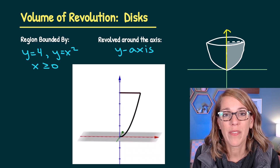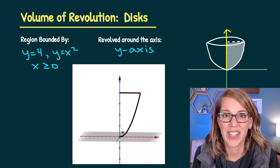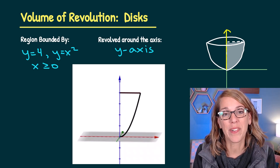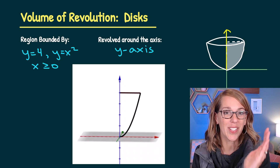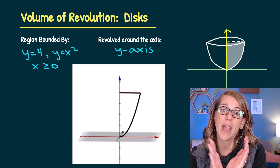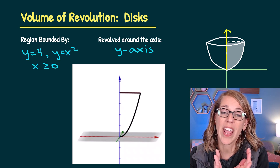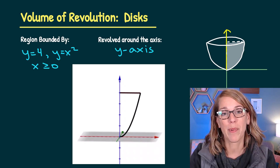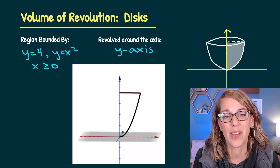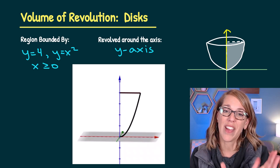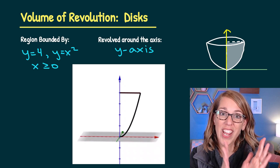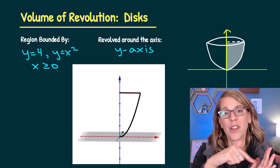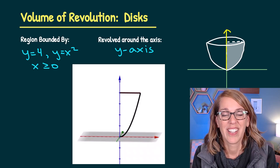We're going to look at volumes of revolution involving disks. In this first example, I've got y is equal to x squared, bounded with the y-axis and a line above at y equals four. You can see that I've got that area shaded, and we're going to revolve that around the y-axis.